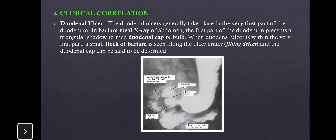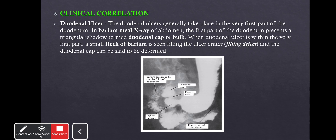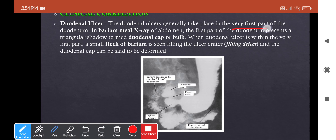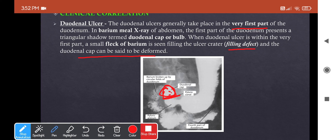For clinical correlations: first, the duodenal ulcer. The first part is most prone to ulceration because it is supplied by end arteries and directly receives acidic chyme from the stomach. On a normal barium meal radiograph, the duodenal cap appears as a triangular shadow with a well-demarcated base and a less distinct apex. In ulceration, the cap is deformed, showing a filling defect where barium fills the ulcer craters.